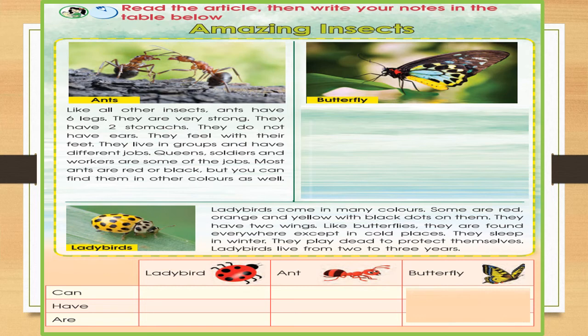Let's read about ants. Like all other insects, ants have six legs. They are very strong. They have two stomachs. They do not have ears — they feel with their feet.